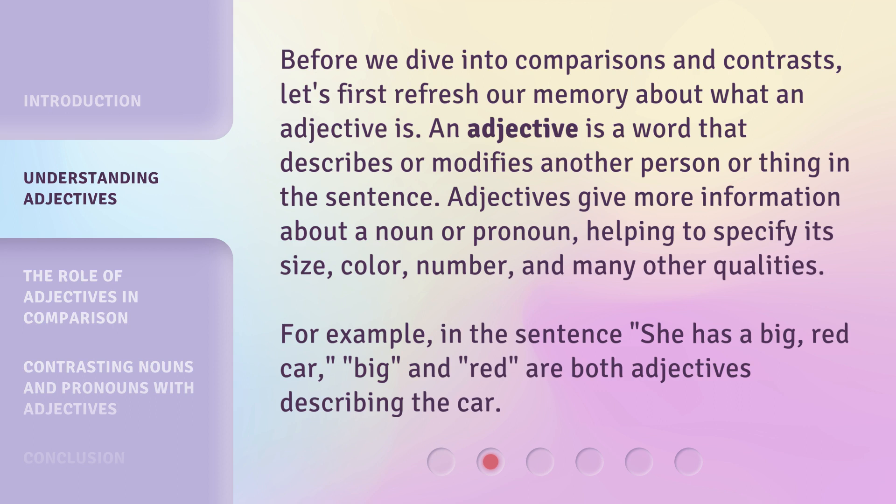Before we dive into comparisons and contrasts, let's first refresh our memory about what an adjective is. An adjective is a word that describes or modifies another person or thing in the sentence. Adjectives give more information about a noun or pronoun, helping to specify its size, color, number, and many other qualities. For example, in the sentence 'she has a big, red car,' big and red are both adjectives describing the car.